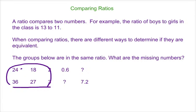Because if you divide 24 and 36 both by 12, it gets you 2 to 3. And if you divide 18 and 27 both by 9, it gets us 2 to 3.